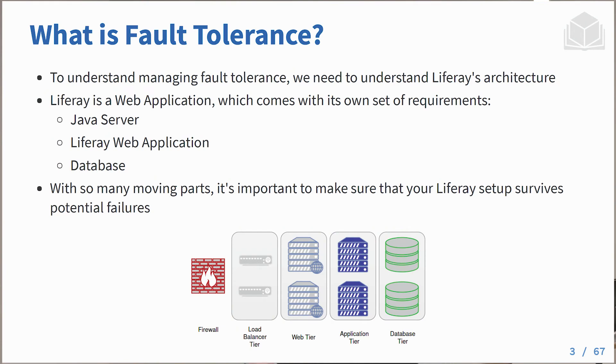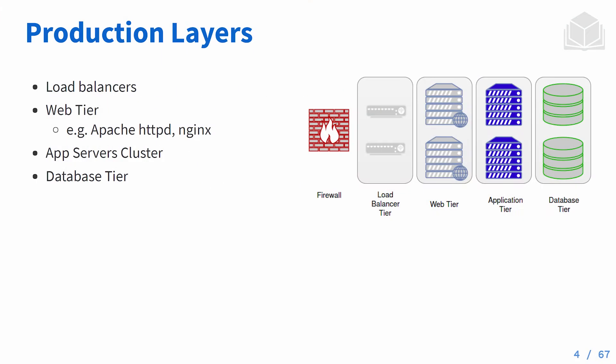Liferay might not be reachable by clients because you might have a load balancer that can also fail. The scenario we look at here covers: a firewall, which we don't cover in this training; the load balancer, which we cover as a bare minimum; the web tier; the application tier — which is the application server together with Liferay; and then the database tier, which for our purposes also includes Elasticsearch or the search solution.